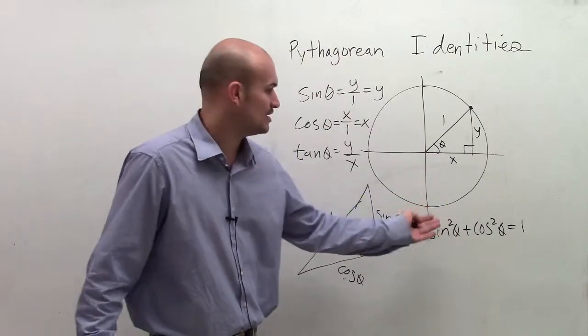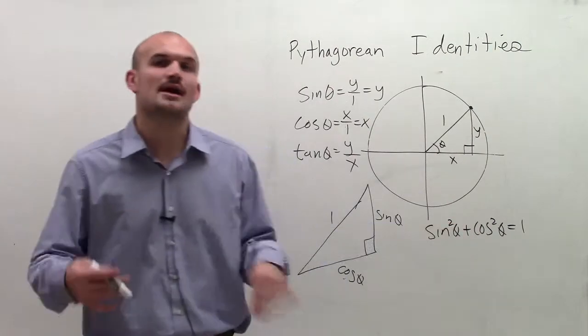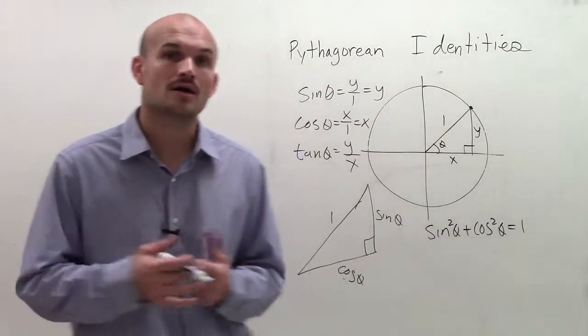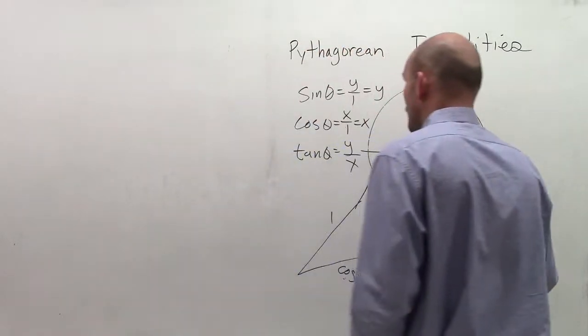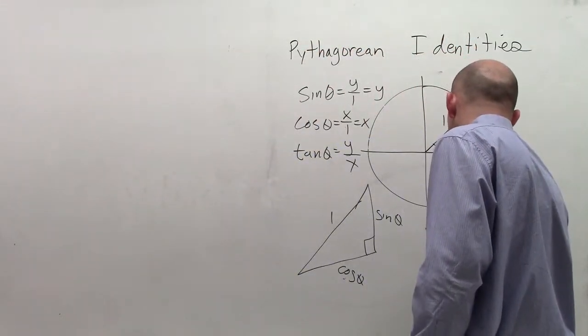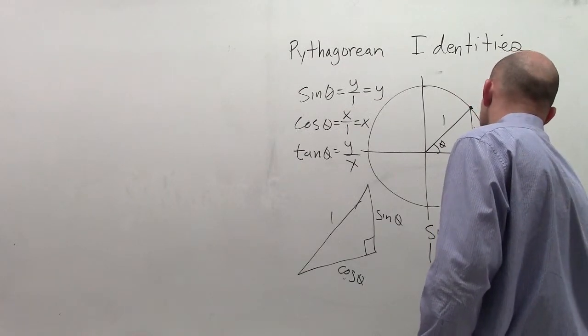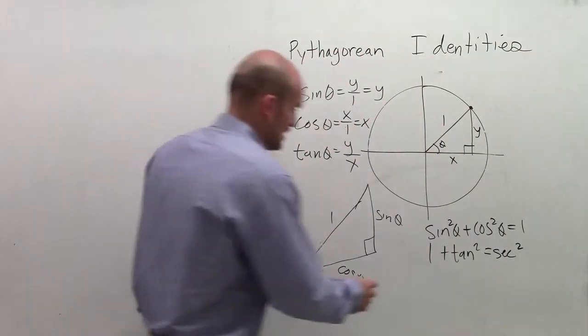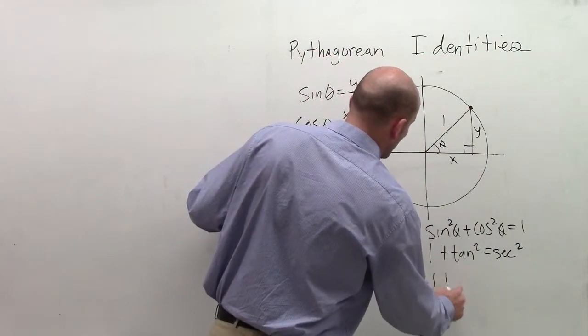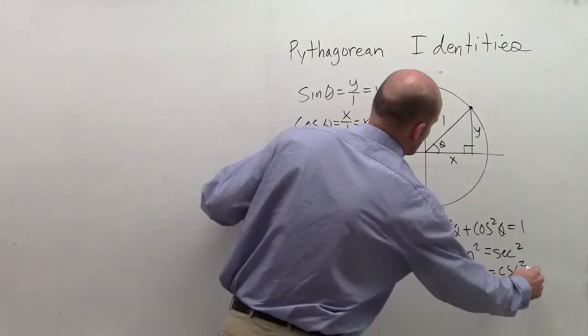This is a Pythagorean identity. Whenever you're coming across sines and cosines, you can use this identity to help you simplify answers or solve an equation. The other ones we can work on: 1 plus tangent squared equals secant squared, and 1 plus cotangent squared equals cosecant squared.